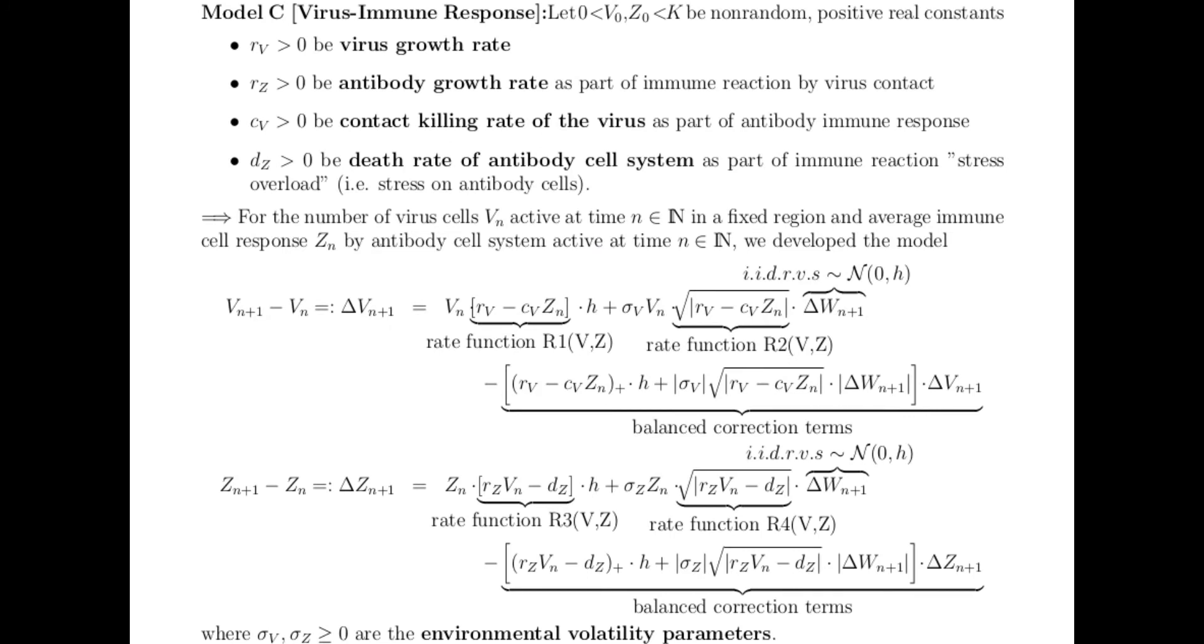And here's the last model. This is the most complicated. This has people getting sick, people recovering, and people having an antibody slash immune response.